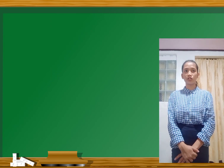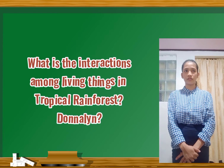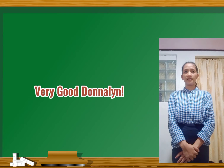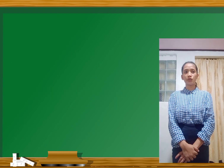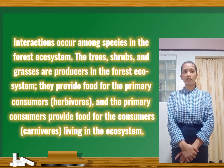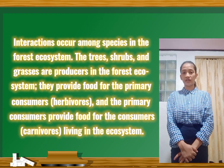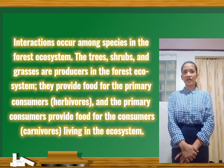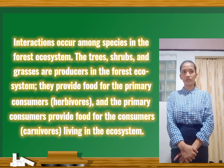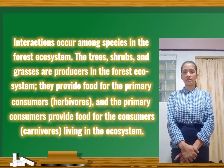And what are the interactions among living things in tropical rainforests? Interactions occur among species in the forest ecosystem. The trees, shrubs, and grasses are producers in the forest ecosystem. They provide food for the primary consumers or herbivores, and the secondary consumers or carnivores living in the ecosystem.